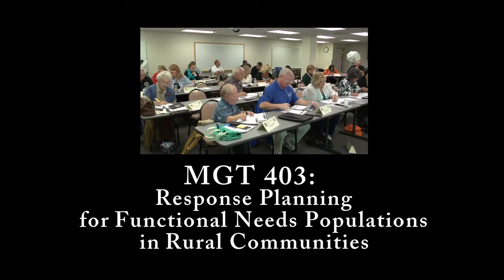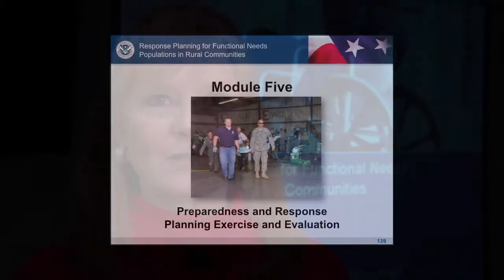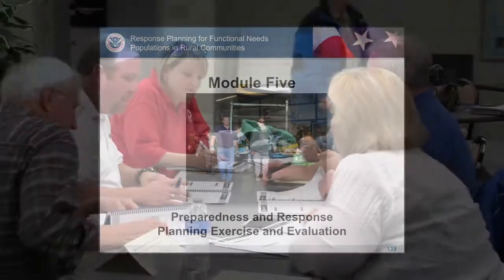Management 403, Response Planning for Functional Needs Populations, covers partnerships — how we can form partnerships between public and private sectors — identifying who belongs in the functional needs populations. We talk about the planning process for those individuals living independently, how we make our community plans for functional needs populations, and considerations important for caregivers. At the end of the course, we have an exercise so that we can begin to put our plans into place, which is a critical piece of the emergency management and planning process.